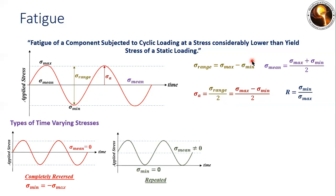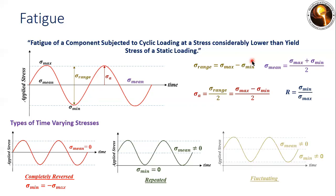The second type is repeated loading, where the minimum stress must be zero, but as clearly observed from the schematic, the mean stress is not equal to zero. The third type is fluctuating loading, where the minimum stress is not zero — it can be either in the tensile or compressive regime — and both the mean stress and maximum stress are also not zero.